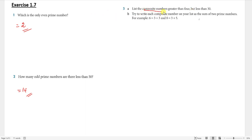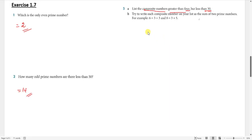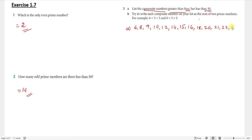Question 3: list the composite numbers greater than 4 but less than 30. Greater than 4 means we start from 6 (since 5 is prime), and less than 30 means up to 28. The composite numbers are: 6, 8, 9, 10, 12, 14, 15, 16, 18, 20, 21, 22, 24, 25, 26, 27, and 28.